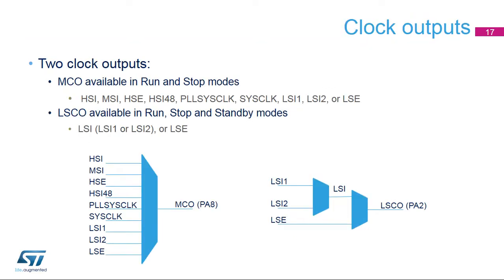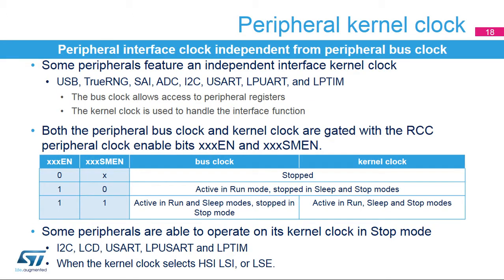The multi-clock output is available on GPIO pin PA-8 in run and stop modes and can select various high and low-speed clocks. A low-speed clock output is available on GPIO pin PA-2 in run, stop, and standby modes and can select various low-speed clocks. Some peripherals have a separate clock for the processor bus interface and the specific peripheral interface function. The bus clock is used to access the peripheral registers, whereas the kernel clock is used for the specific peripheral interface function. Having a separate bus clock and kernel clock allows the application to change the interconnect and processor working frequency without affecting peripheral operation.